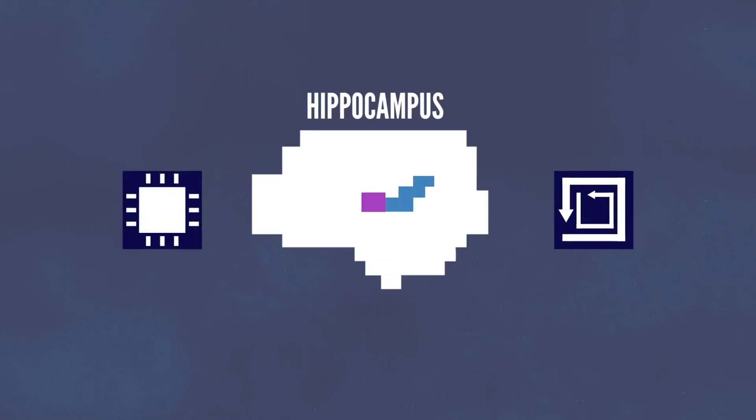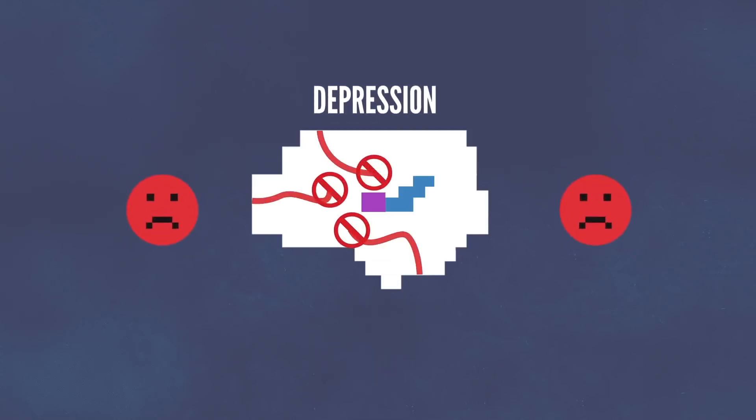One part of the brain affected by depression is called the hippocampus. The hippocampus processes long-term memory and recollection. It also registers fear and it's actually smaller in people with depression. Ongoing exposure to stress impairs nerve cell growth in this part of the brain.